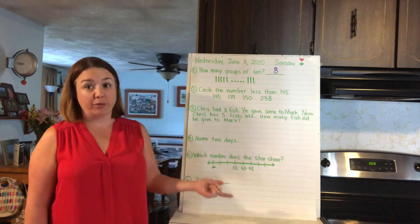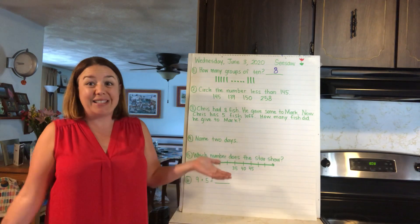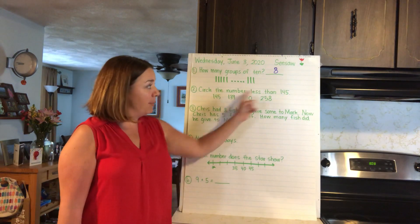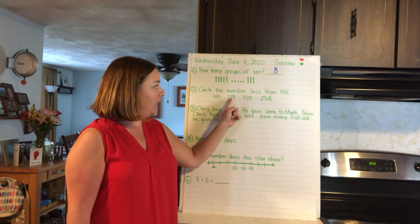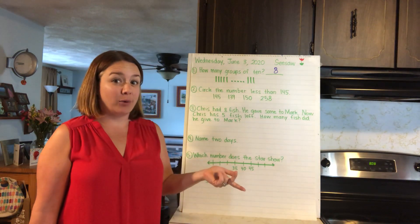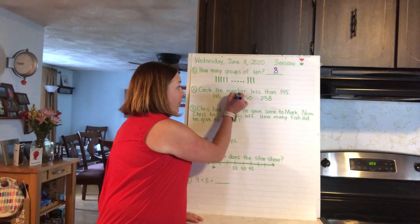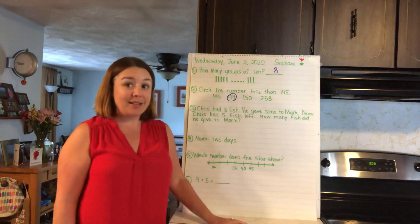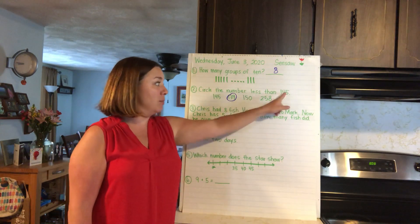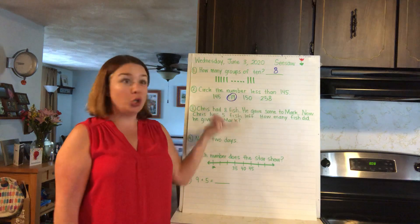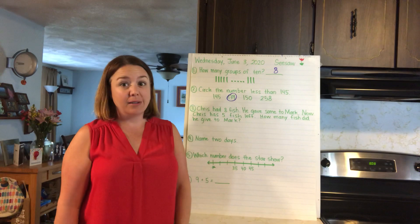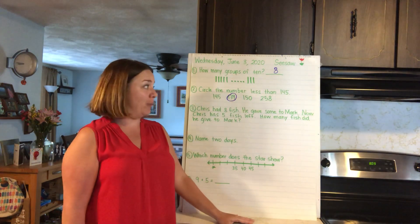The first number is 145, so 145 equals 145 — they're equal. Next, 139: they both start with a 1. 3 tens versus 4 tens — is 3 less than 4? Yes! So 139 is less than 145. 150 is more because 5 tens is more than 4 tens, and 258 is more because 200 is more than 100. So you should have 139 on your paper — that is less than 145.